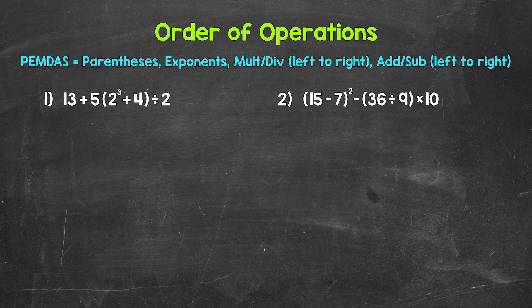Starting with number 1, where we have 13 plus 5, and then in parentheses, 2 cubed plus 4, and parentheses, divided by 2. Now one thing I want to mention before we get started: whenever we have a number next to parentheses — so we have 5 and then a set of parentheses — that's multiplication. So we have 5 times whatever we get within those parentheses.